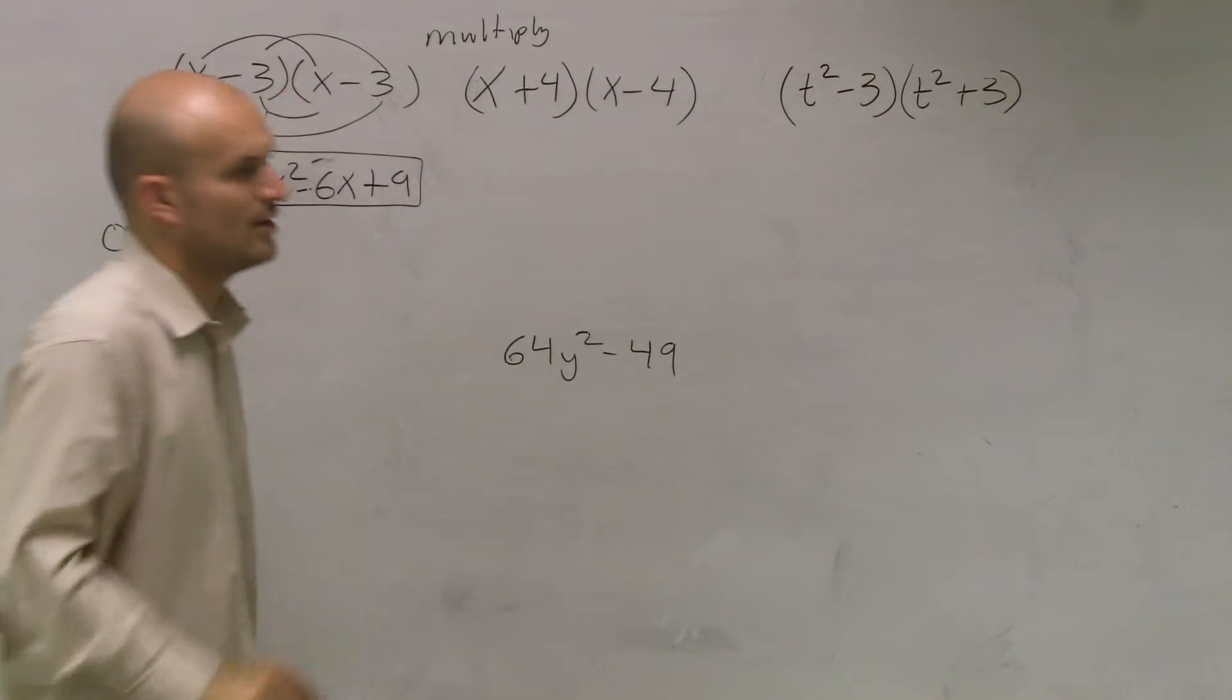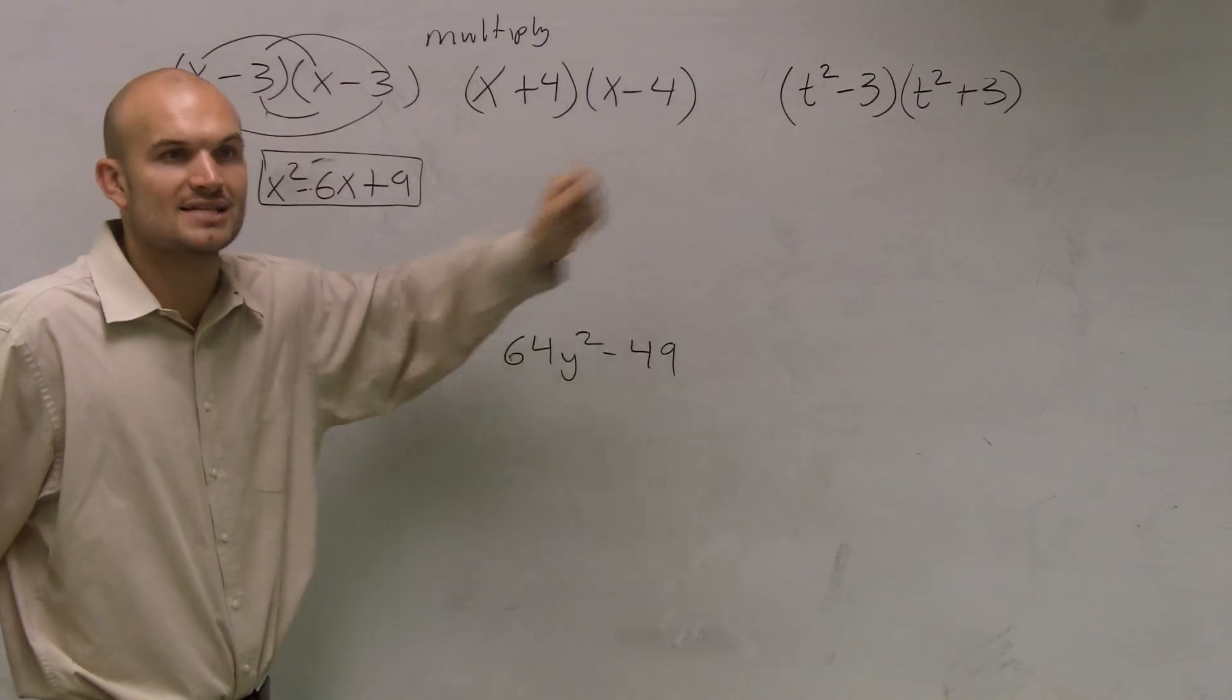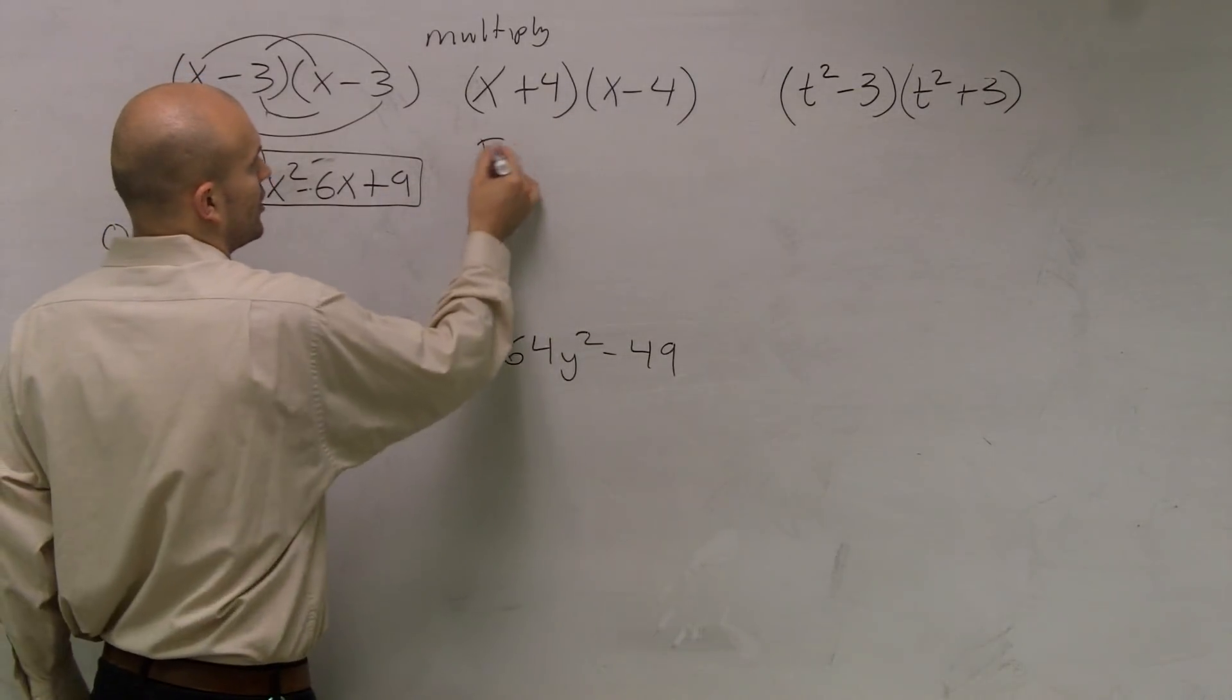Your middle terms multiply by each other, all you're really doing is you're doubling them. So now I want you to take a look at what happens if we have the same numbers, but now we have a difference. One's positive, one's negative.